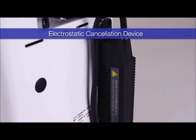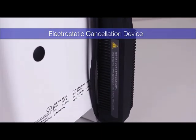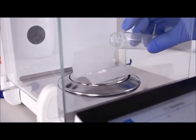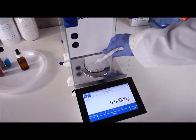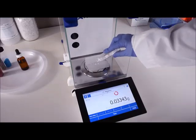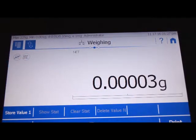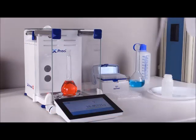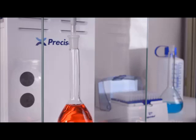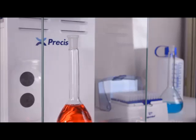As an option, an electrostatic cancellation device can be installed onto the balance, removing static electricity buildup from the weighing chamber which can cause inaccuracies in weighing and can make powder samples difficult to handle. The balance will notify you when the electrostatic cancellation device is operating.